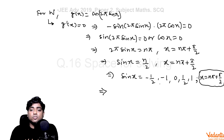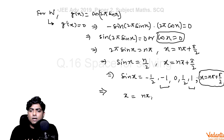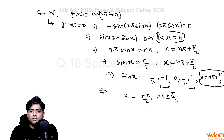So for set W we need sin x = 0, ±1/2, or ±1. This gives x values: for sin x = 0, x = nπ; for sin x = ±1, x = nπ/2; for sin x = ±1/2, x = nπ ± π/6. Combining, the set W contains angles like π/6, π/2, 5π/6, π, 7π/6, 3π/2, etc.